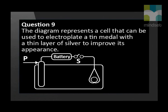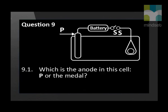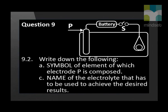The diagram represents a cell that can be used to electroplate a tin metal with a thin layer of silver to improve its appearance. Which is the anode in this cell — P or the metal? Write down the symbol of the element of which electrode P is composed and the name of the electrolyte that has to be used to achieve the desired results.